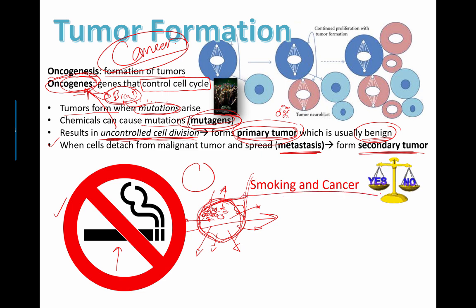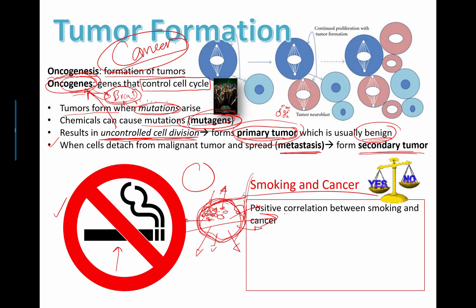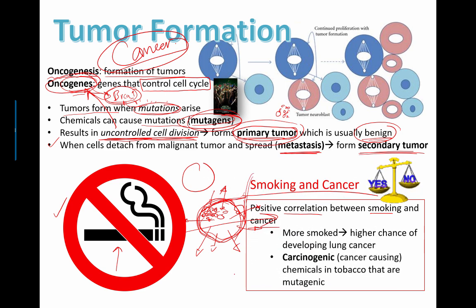This is pretty obvious, smoking and cancer. A lot of evidence, there's a strong positive correlation between smoking and cancer. I think you know that already. More smoking, higher chance of developing lung cancer. This is one of the leading killers in the world. And I think you know about that. Anything that's considered carcinogenic means that it's cancer causing and chemicals in tobacco are cancer causing. And they're also mutagens because they can cause mutations. Thanks, everyone.